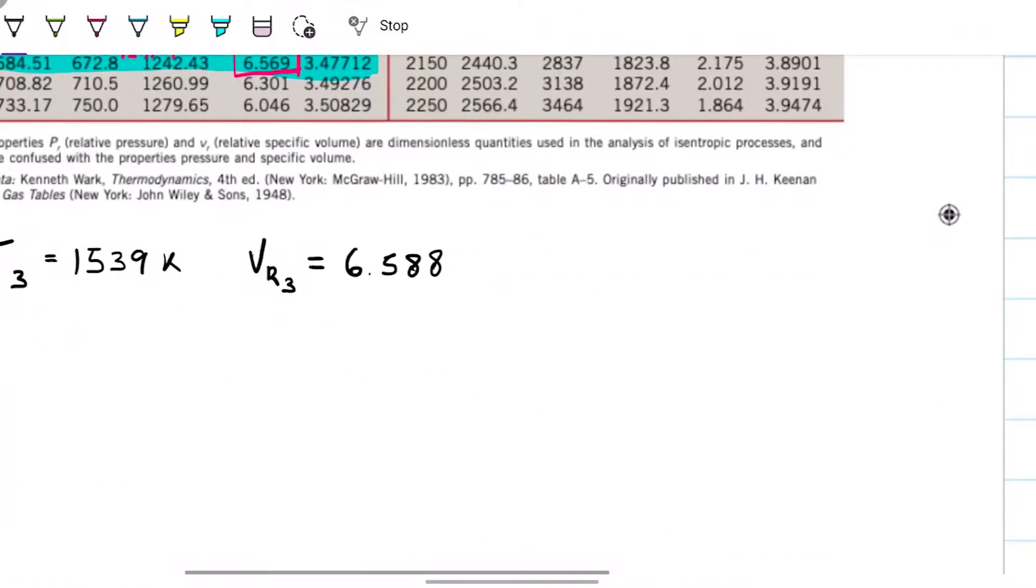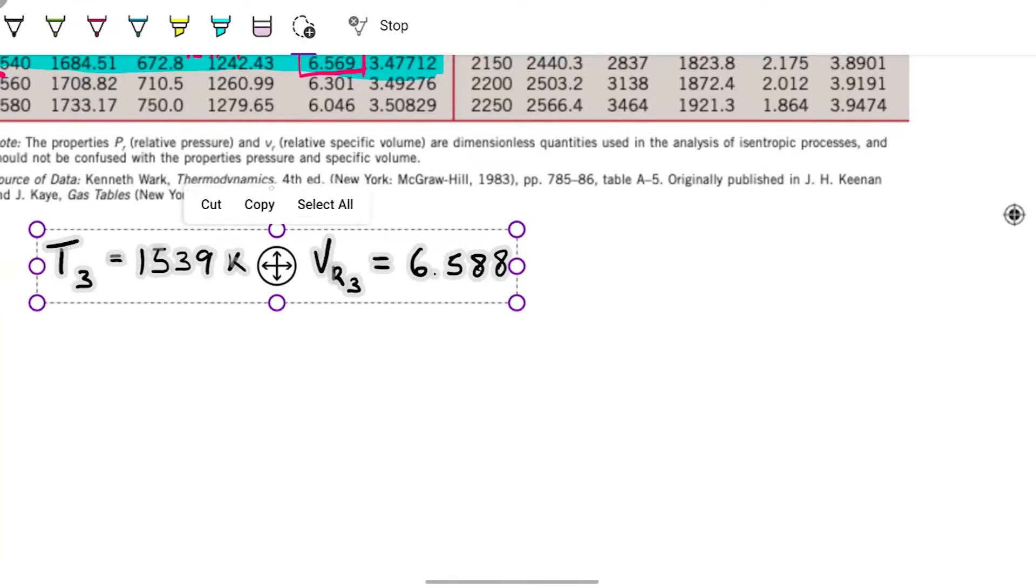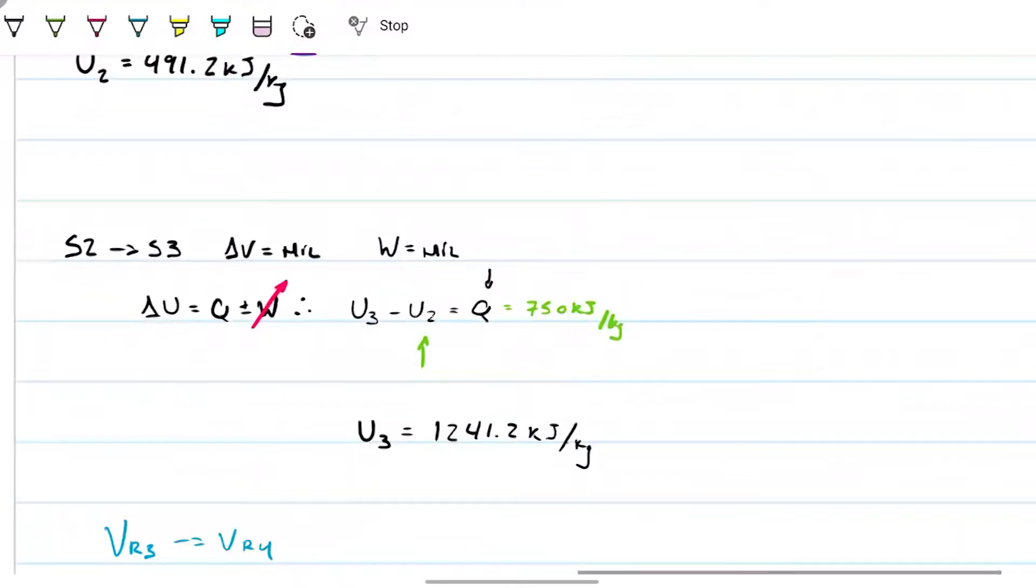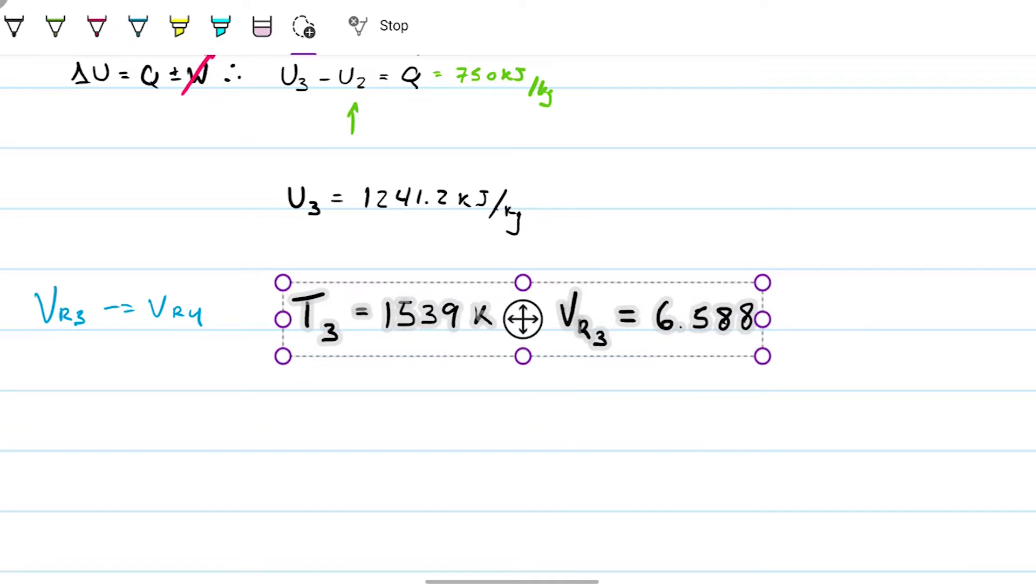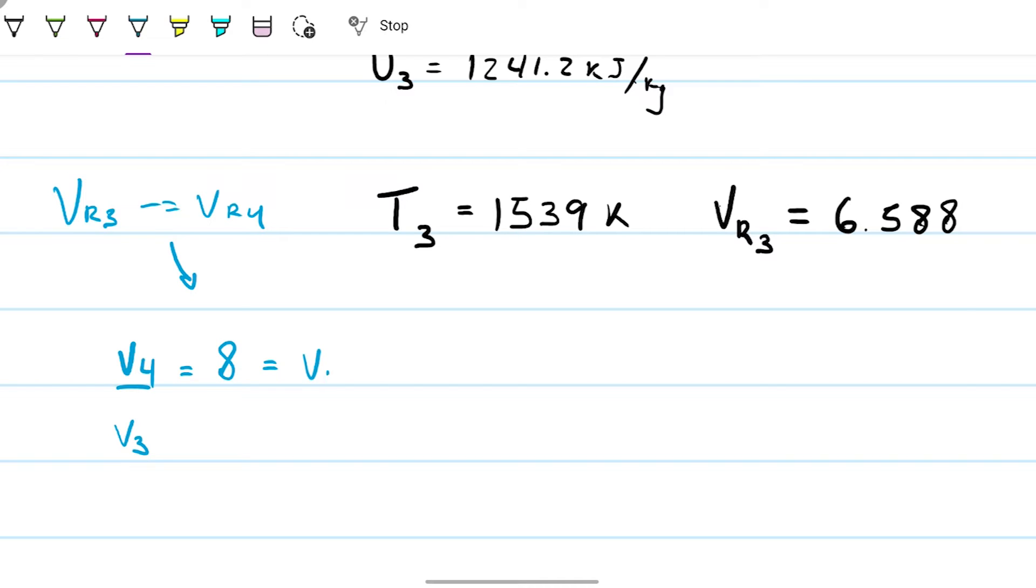Alright, last but not least, so this is for state 3. I'm going to go ahead and copy this to where our info is here. And then last piece of the puzzle is from 3 to 4, we know V₄ over V₃ is 8, because they're the same volumes, and we also know VR₄ has to be equal to VR₃ like so, only because it's an isentropic process.